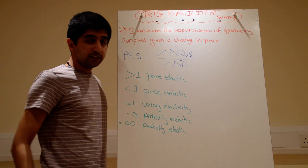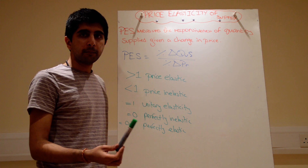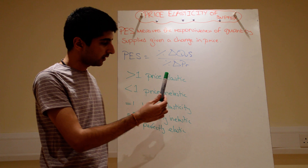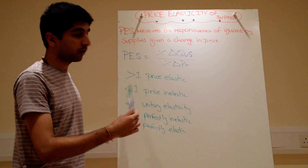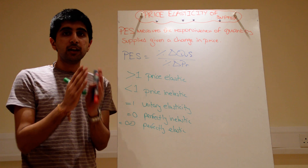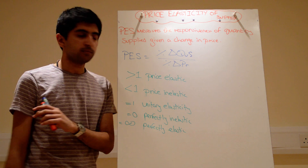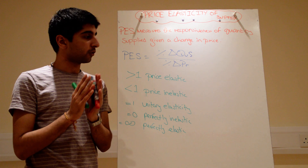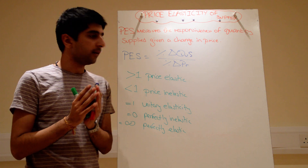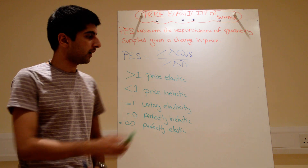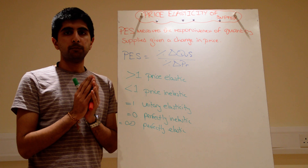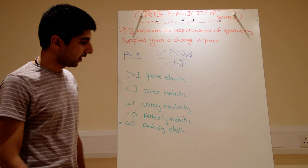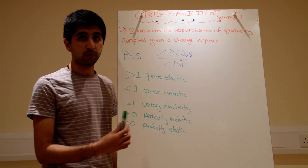The same kind of relationships exist when interpreting our number. Greater than one is price elastic, just like before. Less than one is price inelastic — supply doesn't respond very much to a change in price. Price elastic means quantity supplied responds more than proportionately to the price change. When the price changes, quantity supplied responds by a large amount — that's elastic. And then we've got the extreme cases, just as before.